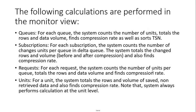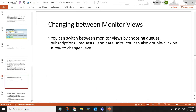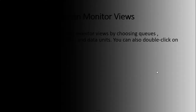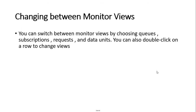For each queue, the system counts the number of units, totals the rows and data volume, finds the compression rate, and sorts by TSN. For each subscription, the system counts the number of units per queue in the delta queue, totals the changed rows and volume before and after compression, and finds the compression rate. For each request, the system counts the number of units per queue, totals the rows and data volume, and finds the compression rate. For a unit, the system totals the rows and volume of saved, non-retrieved data and also finds the compression rate. Note that the system always performs calculation at the unit level. You can switch between monitor views by choosing queues, subscriptions, requests, and data units. You can also double-click on a row to change views.